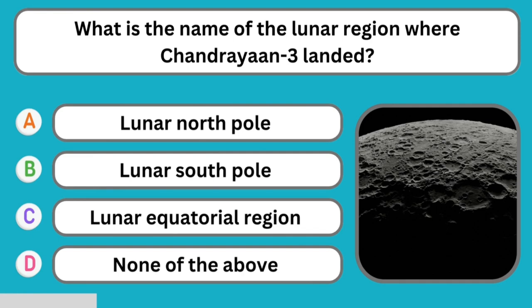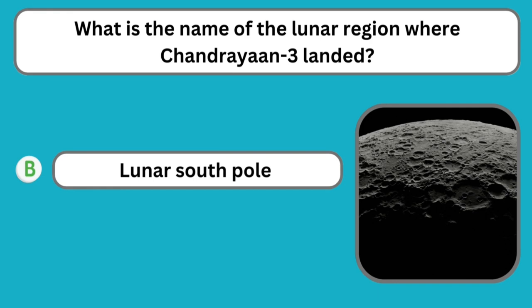Question number six: What is the name of the lunar region where Chandrayaan 3 landed? The correct answer is the Lunar South Pole.